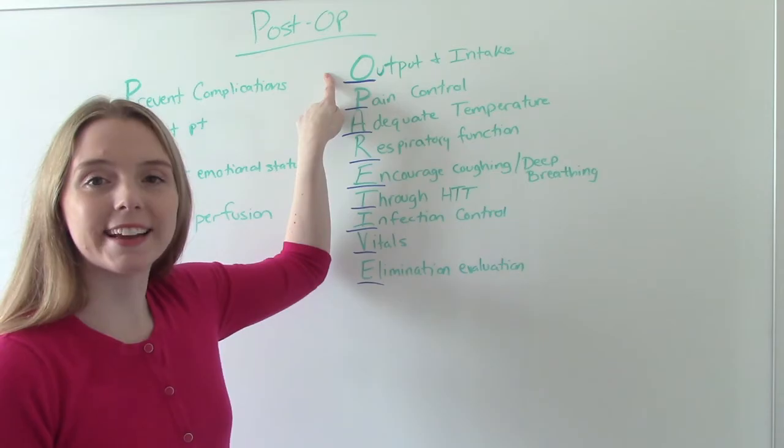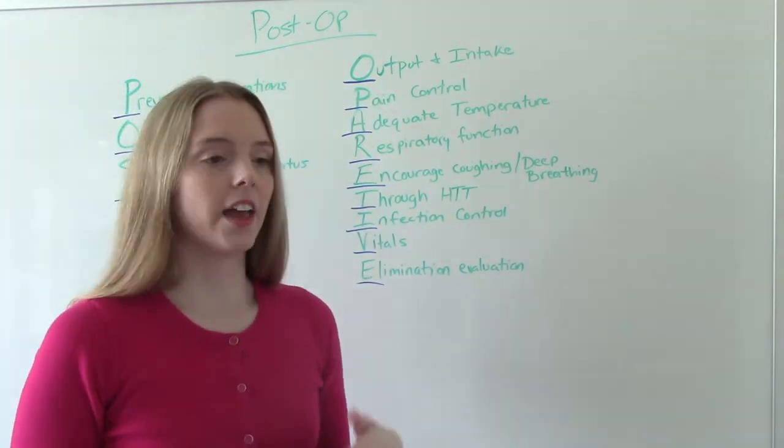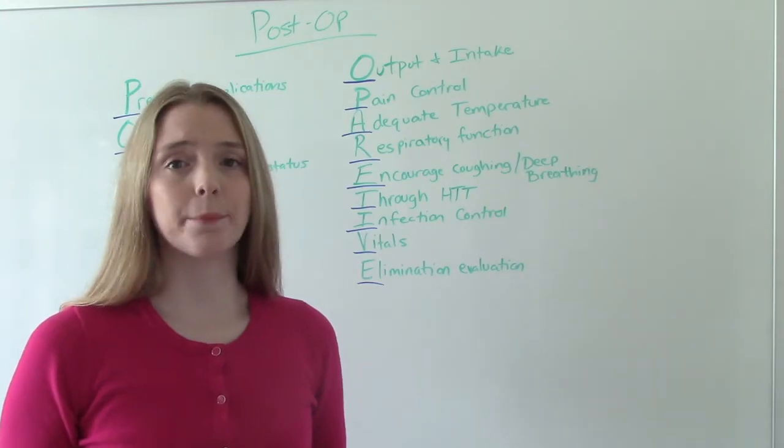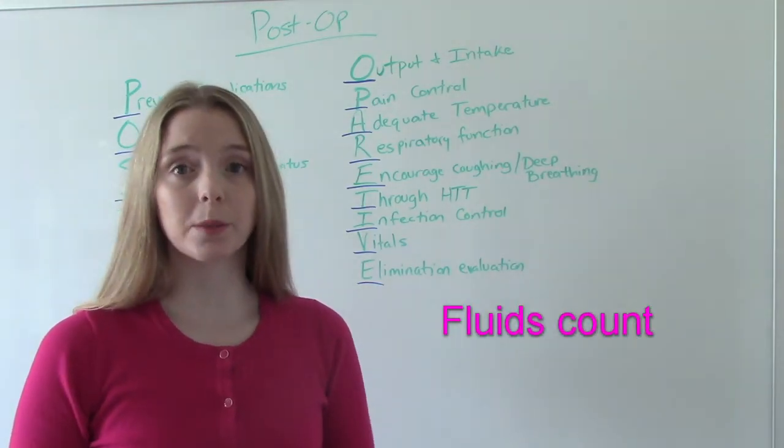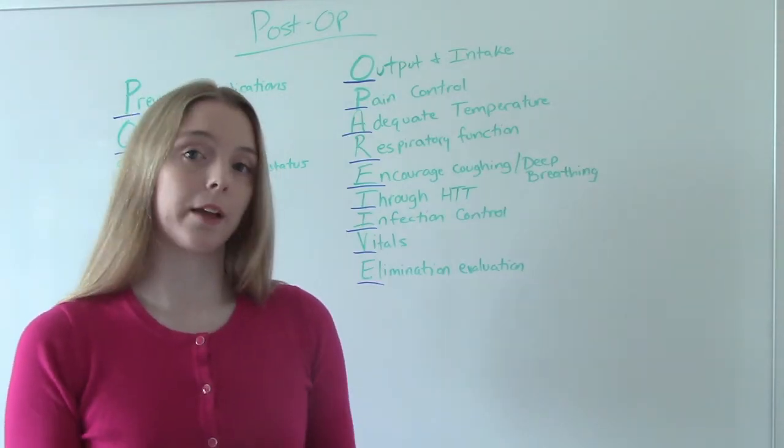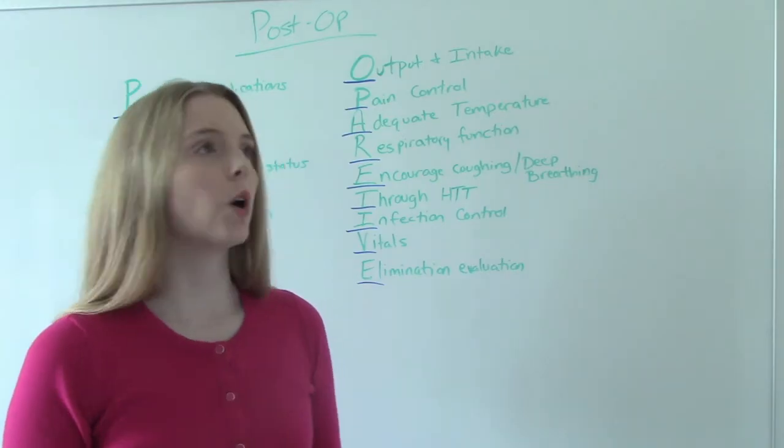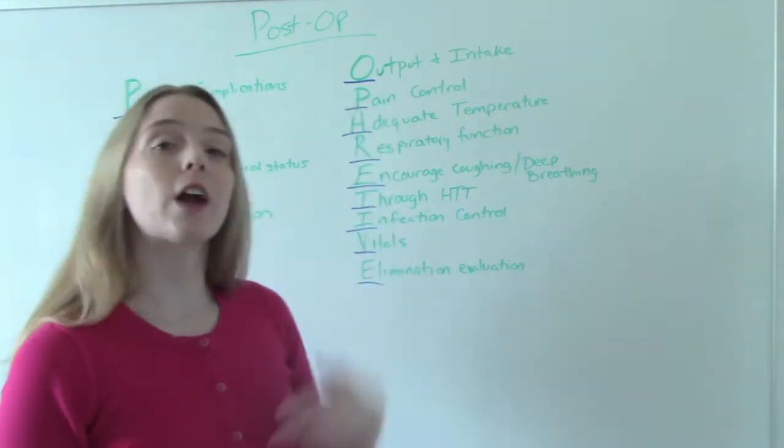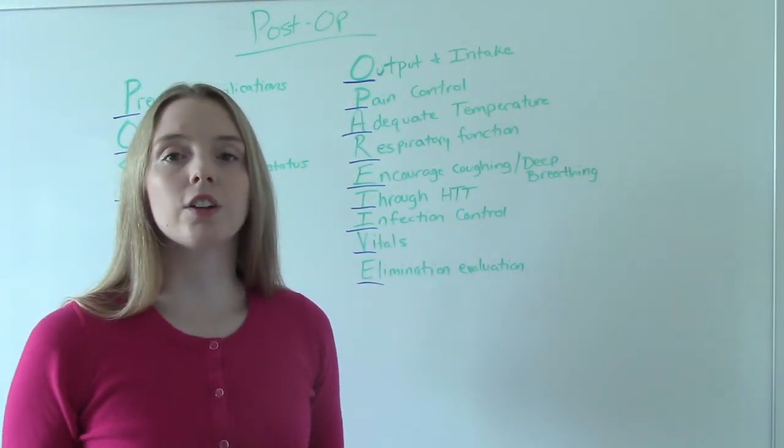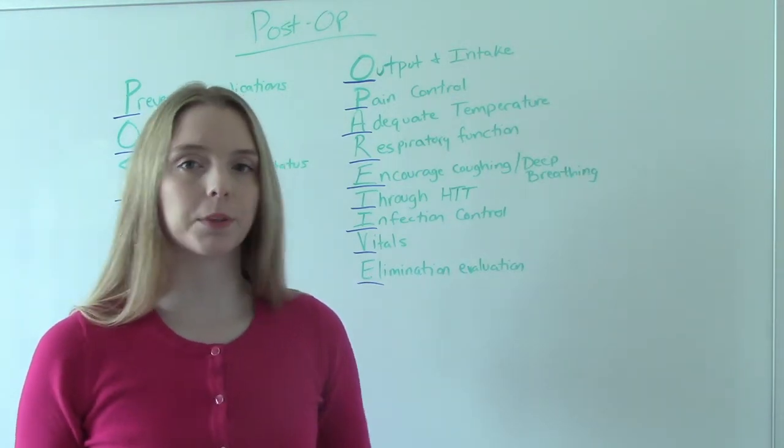O is for output and intake. So if this was a general anesthetic, then they're probably not allowed anything except maybe little sips of ice chips or something like that. If it wasn't, if this was like a regional or a local, they might be allowed to have something to eat or maybe some clear liquids. So monitoring their input and then their output. So oliguria, less than 30 mls per hour of urine. That's something we're looking for.